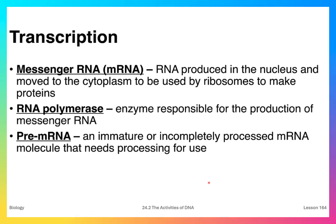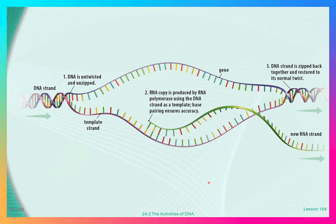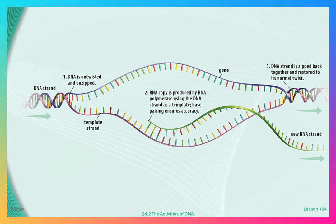Pre-mRNA is an immature molecule which is incompletely processed mRNA that has to be further processed in order to be used. This diagram shows the production of mRNA. Similar to the replication process, the DNA has to be unzipped and untwisted, and then an RNA polymerase molecule comes along and, using complementary base pairs, produces an RNA molecule which then goes out of the nucleus and is used for the production of protein.